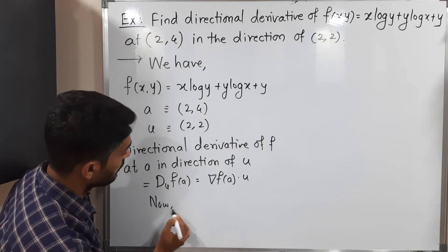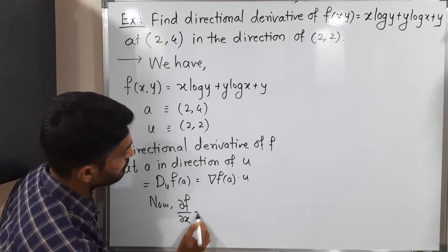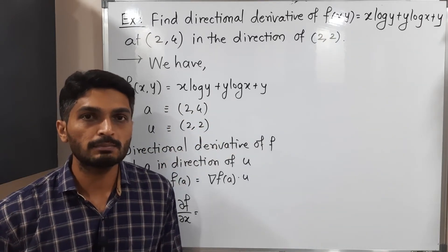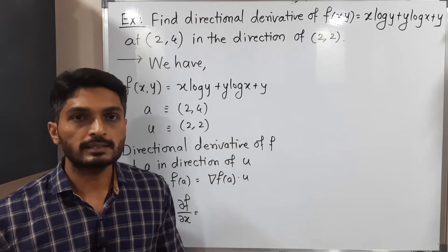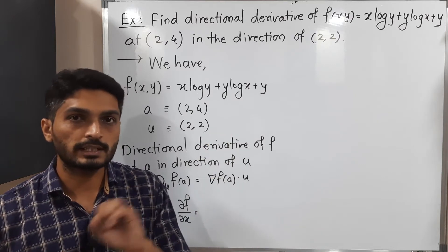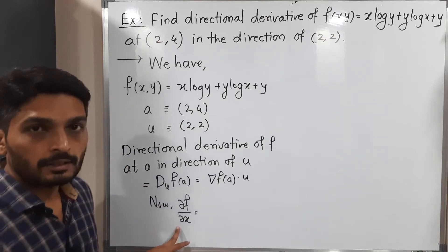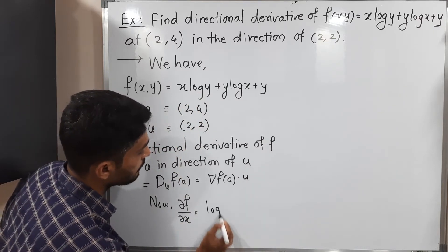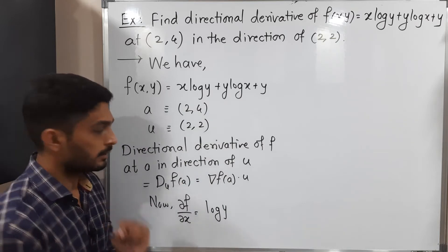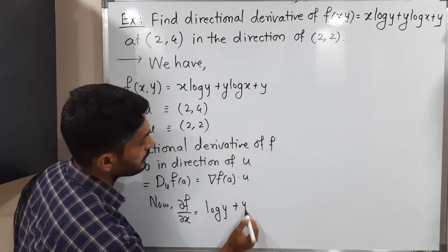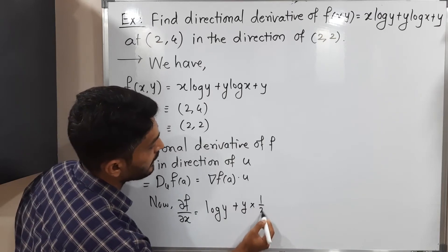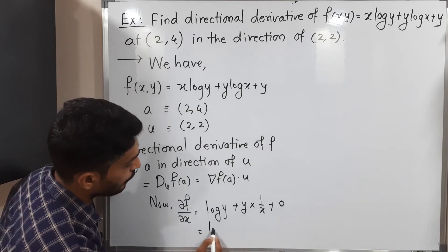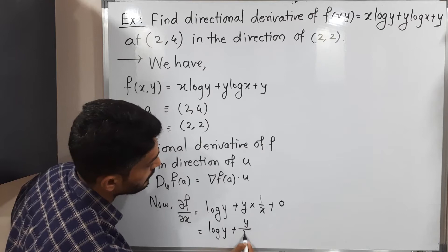Now let us find ∂f/∂x. Taking partial derivative with respect to x, y is constant so log(y) is constant. Derivative of x is 1, and y is constant so derivative of log(x) is 1/x. Derivative of y with respect to x is 0. So we have ∂f/∂x = log(y) + y/x.